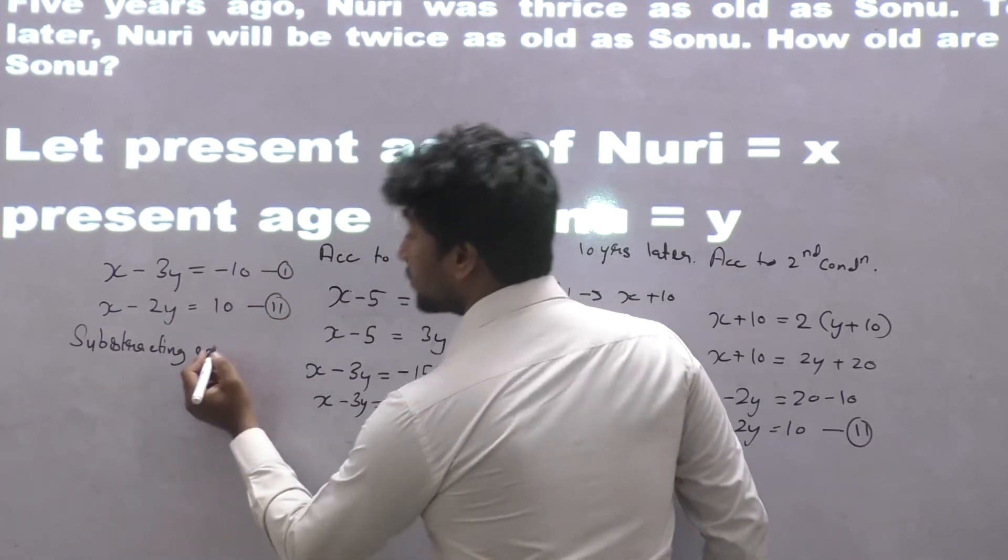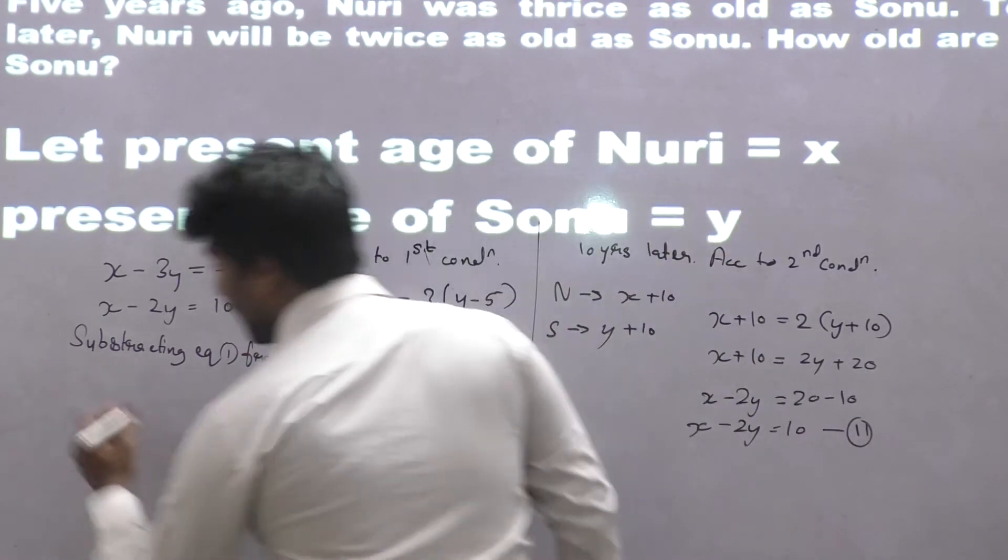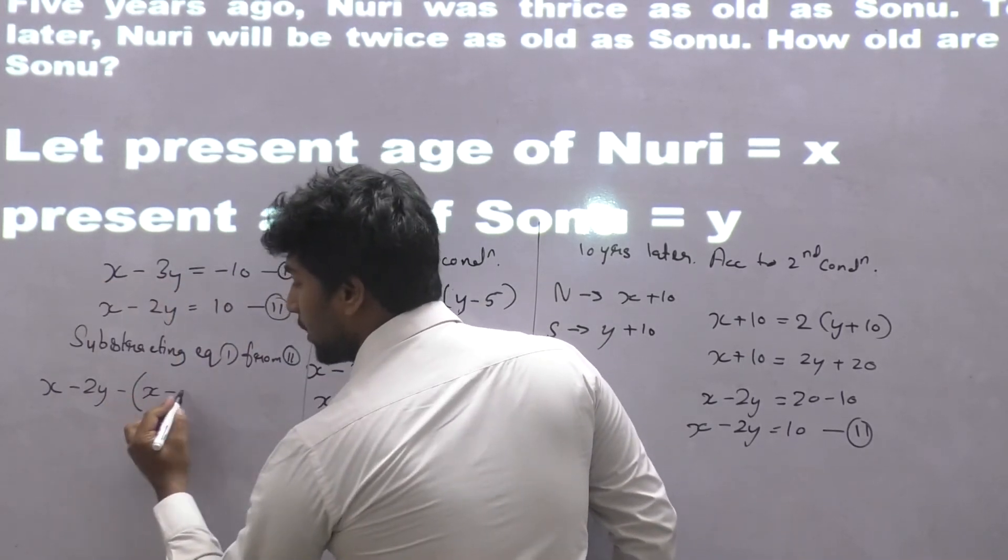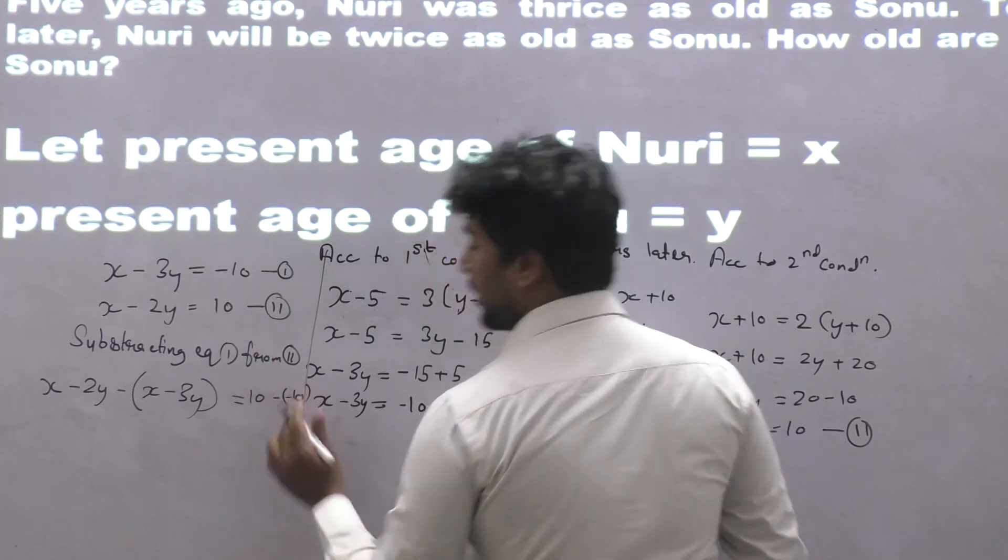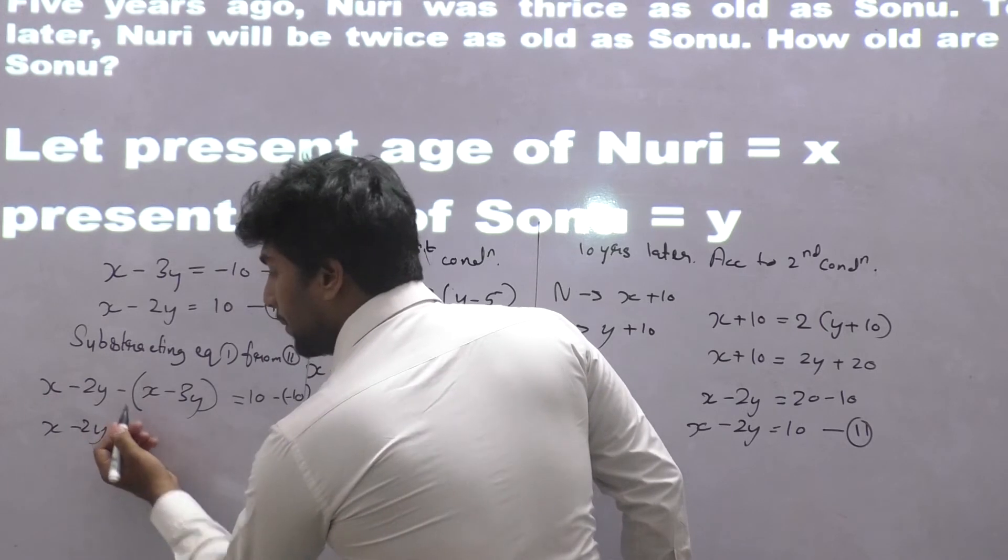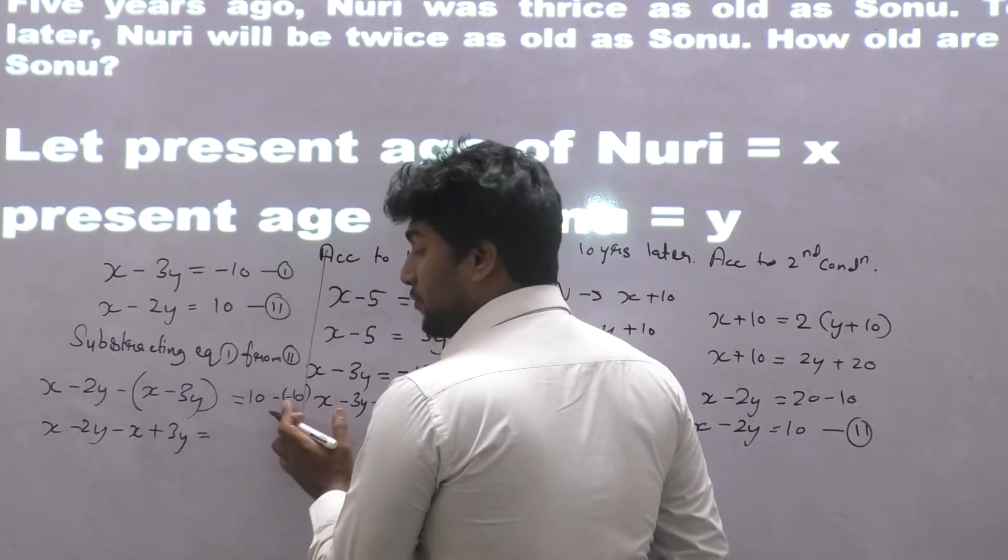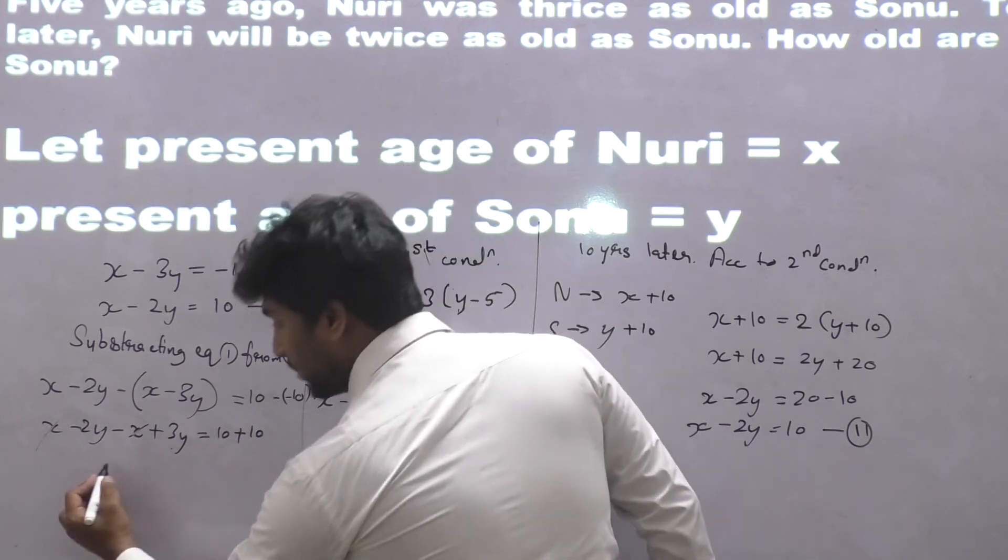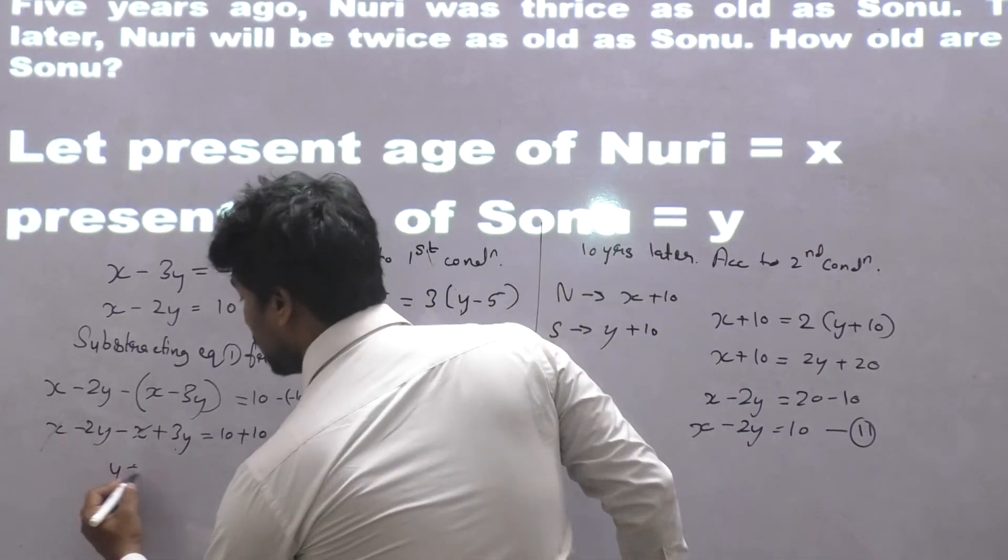Subtracting equation 1 from equation 2. x minus 2y minus, when you open the bracket, minus x plus 3y equals 10 minus minus 10. On solving, x minus 2y minus x plus 3y equals 10 plus 10 which is 20. x and x cancel out. 3y minus 2y becomes y. So y equals 20.